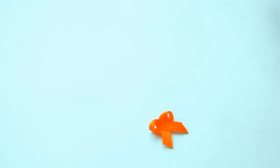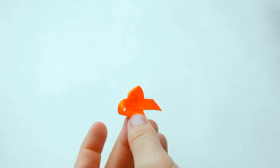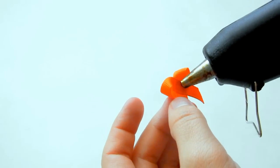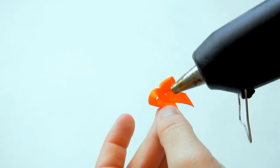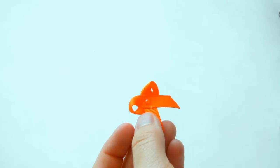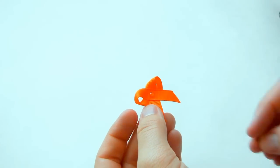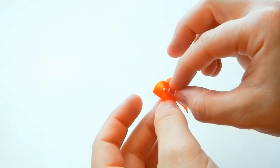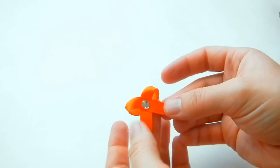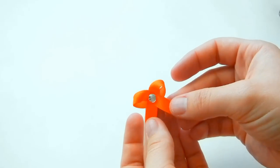And then now take your gem. I'm just going to add a dab of glue in the middle of the bow and then take your gem and place it on. That is how to do the bow. It's super easy.